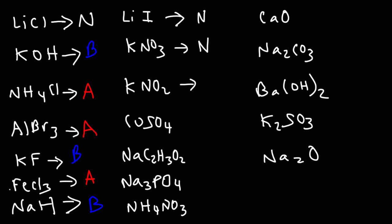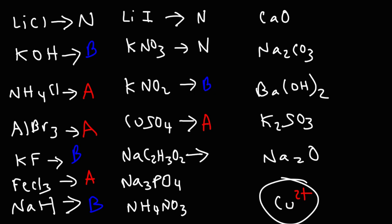Nitrite is different — that's a basic ion because HNO2 is a weak acid. Copper(II) sulfate: sulfate is neutral, but the Cu2+ ion — while its charge is not as high as 3+, copper(II) is enough to make the solution slightly acidic. You can look up the Ka value for these metal ions to really determine if it's acidic. Sodium acetate: acetate comes from acetic acid, a weak acid, so acetate is basic. Phosphate (PO4 3-): that negative 3 charge makes it a basic polyatomic ion.